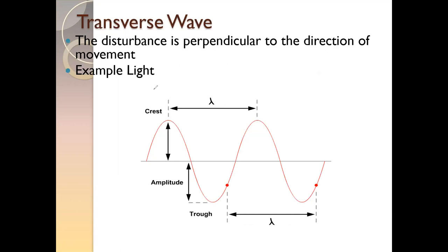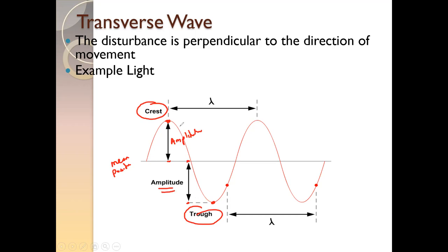For a transverse wave, we define certain parameters. The disturbance or vibration is perpendicular to the direction of the wave. The highest point of a transverse wave is known as a crest, and the lowest point is known as a trough, and the center of the wave is the mean position. The distance from the mean position to the crest is known as amplitude, and the distance from the mean position to the trough is also known as amplitude.